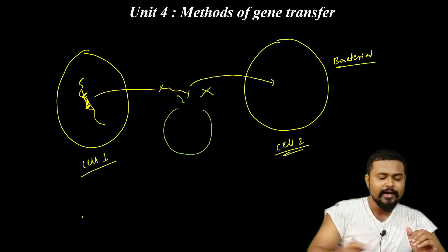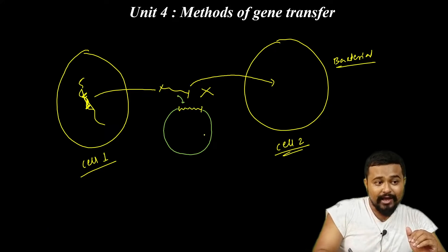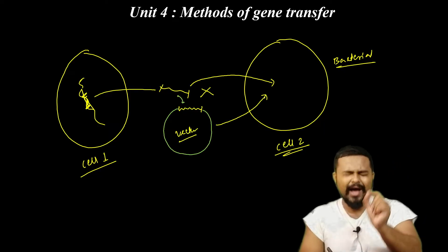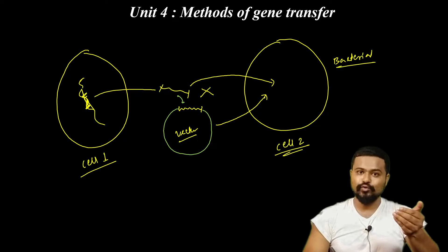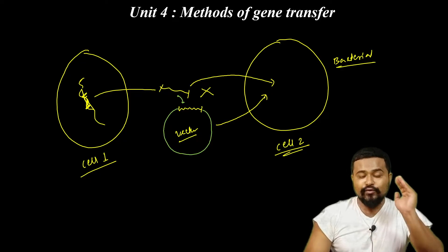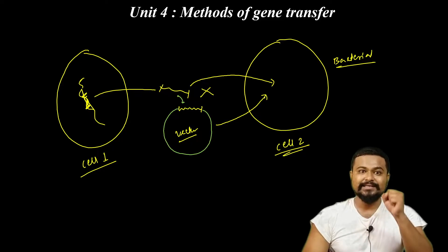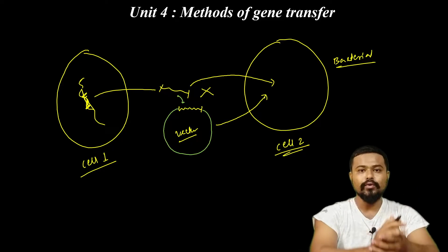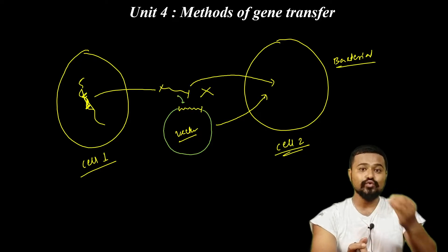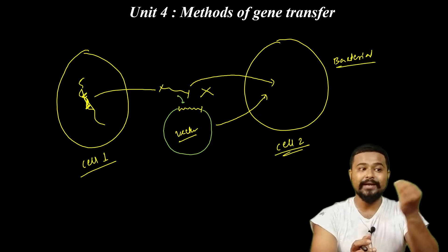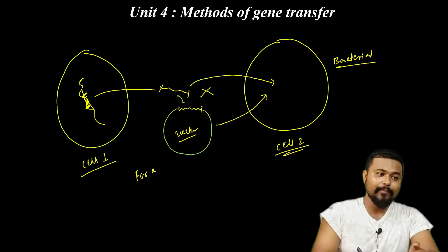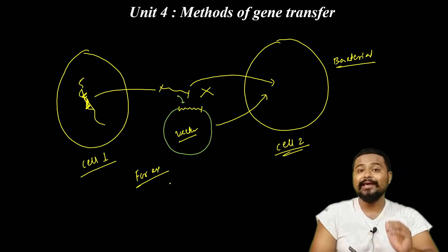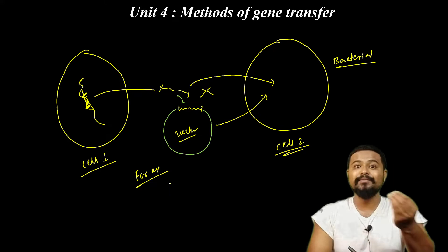I am going to start Unit 4, which I can apply to a gene of interest. I already established this in the last 3 units. But Unit 4 specifically — what you need to do is find the best method to help our gene transfer. For example, you can use Ti plasmid to transfer the gene of interest.